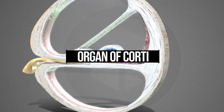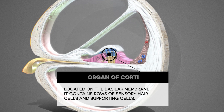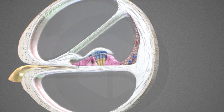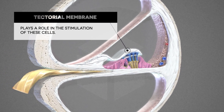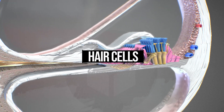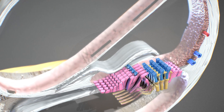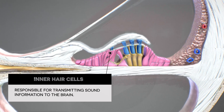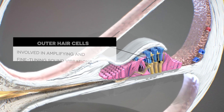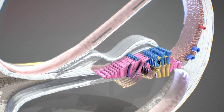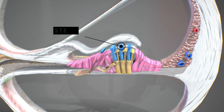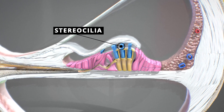The organ of Corti is located on the basilar membrane and contains rows of sensory hair cells and supporting cells. Above the hair cells is the tectorial membrane, which plays a role in the stimulation of these cells. There are two types of hair cells: inner hair cells, responsible for transmitting sound information to the brain, and outer hair cells, involved in amplifying and fine-tuning sound vibrations. The hair cells have tiny projections called stereocilia that protrude into the endolymph.